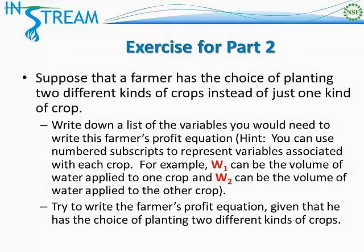Now we would like you to conduct an exercise based on what we just went through in this part of the module. We made some simplifying assumptions about how a farmer makes a decision, and one of those was that he could only plant one kind of crop. But now suppose that a farmer has the choice of planting two different kinds of crops instead of just one. We are removing one of the simplifying assumptions of our model, and your task is to write down a list of variables that you would need in order to write this farmer's profit equation for a farmer who is able to plant two different kinds of crops.